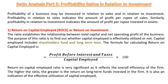The first ratio of profitability ratios in relation to investment is return on capital employed, also called return on investment. This ratio establishes the relationship between total capital and net operating profit of the business. The purpose of this ratio is to find out whether capital employed is effectively utilized or not. Capital employed includes shareholders fund and long-term loan. The formula is profit before interest and taxes divided by capital employed, multiplied by 100. Higher the ratio, better are the results.